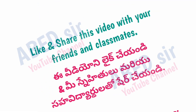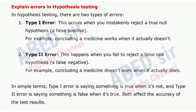Next important short question: Explain errors in hypothesis testing. In hypothesis testing, there are two types of errors. 1. Type I error: this occurs when you mistakenly reject a true null hypothesis — a false positive. For example, concluding a medicine works when it actually doesn't. 2. Type II error: this happens when you fail to reject a false null hypothesis — a false negative. For example, concluding a medicine doesn't work when it actually does. In simple terms, Type I error is saying something is true when it's not, and Type II error is saying something is false when it's true. Both affect the accuracy of the test results.